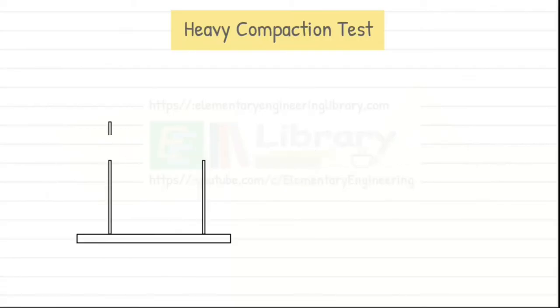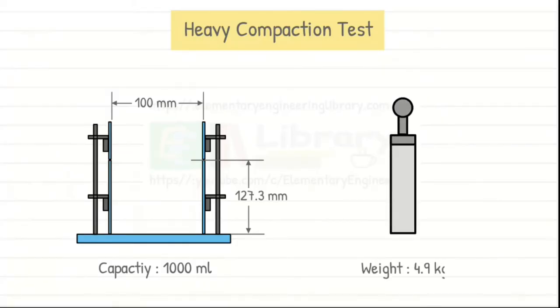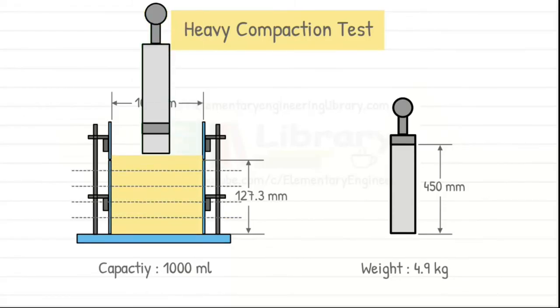In heavy compaction test, the mold is of 100 mm diameter, 127.3 mm height and 1000 ml capacity. The weight of a rammer is 4.9 kg and free drop is 450 mm. Also, the soil is compacted in 5 layers and each layer is tamped 25 times.